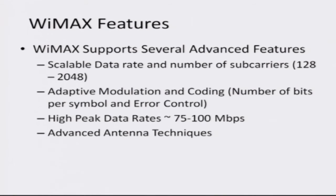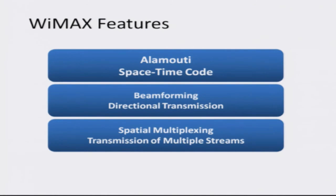WiMAX supports several advanced features such as adaptive modulation and coding — adaptively changing the number of bits transmitted according to the strength of the link to improve efficiency — very high peak data rates around 75 to 100 megabits per second, and advanced antenna techniques using multiple antennas to significantly improve received signal strength. These include space-time codes, which increase reliability through coding, and beamforming, which focuses the transmitted energy in a particular direction to improve energy efficiency and increase data rate or signal strength to particular users.